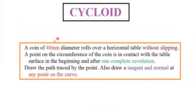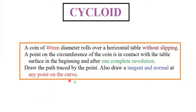Now the question: a coin of 40 mm diameter — so diameter of the circle is 40 mm — rolls over a horizontal table without slipping, so without slipping confirms it is a cycloid. A point on the circumference of the coin is in contact with the table surface at the beginning, and after one complete revolution (360 degrees), draw the path traced by that point, and also draw a tangent and normal at any point on the curve.